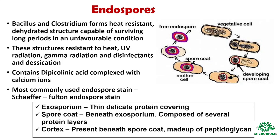The endospore consists of three layers: the exosporium, the spore coat, and the cortex. The exosporium is a thin, delicate protein covering. The spore coat is beneath the exosporium and is composed of several protein layers. The cortex is beneath the spore coat and is made up of peptidoglycan.